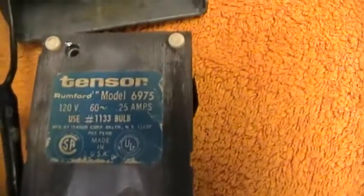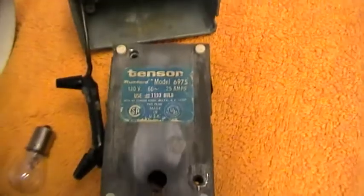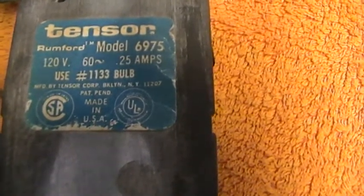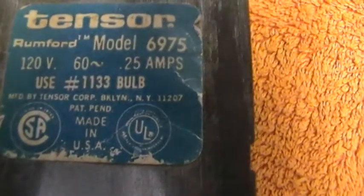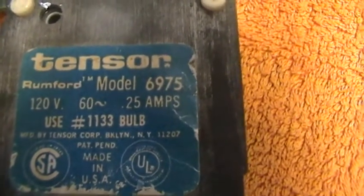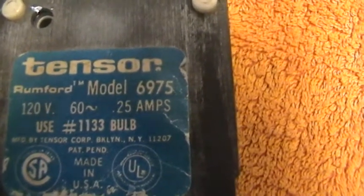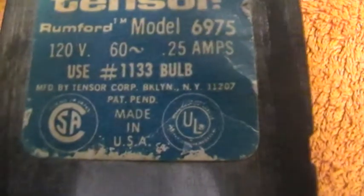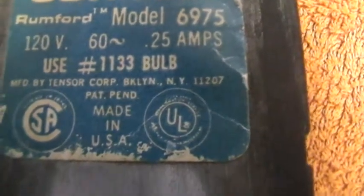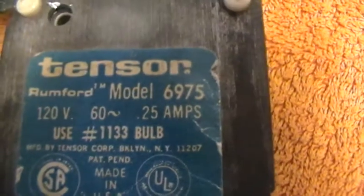As you can see, it's got the name down here. It's made by a company called Tensoar, and it's not Chinese. This was before the Chinese crap came over. It's made in USA, got the two safety standards on there. It takes a lamp number 1133, 120 volts. It's the Tensoar Rumford model 6975. Tensoar Corporation, Brooklyn, New York. Genuine American-made lamp.